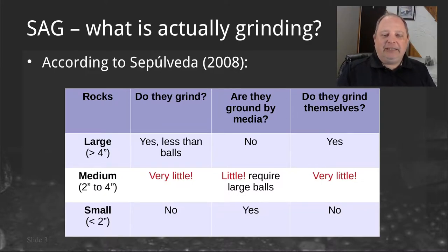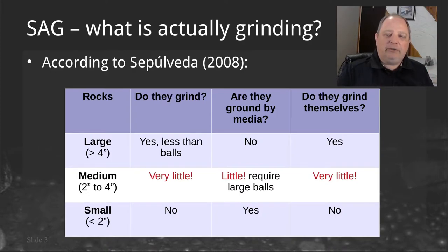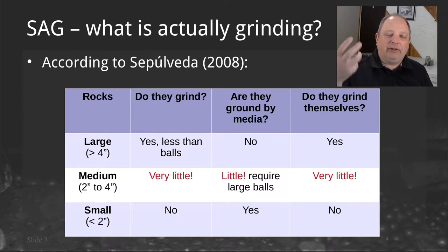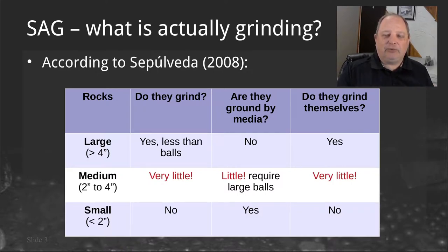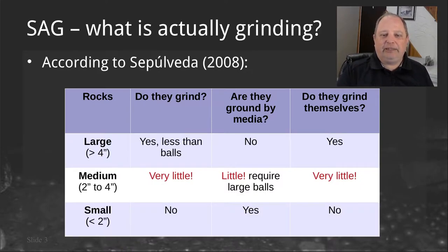Then there's the intermediate size class, generally known as the critical size or the pebbles. They don't do much grinding and they are difficult to grind with grinding media — the only way you're generally going to break them is with really big steel balls. So that medium size class, often called the critical size or pebble size class, is difficult to grind in tumbling mills. This is one of the reasons why you will often see a tumbling mill in closed circuit with a pebble crusher, which is very efficient at grinding this medium size class.